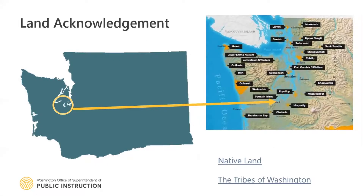I am joining you today from Olympia, Washington. That is the traditional tribal lands of the Squaxin Island people. If you happen to know the nearest tribal neighbor to where you're located, go ahead and pop that into the chat window, and let's see what representation we have from across the state.